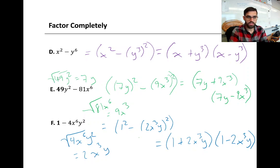For example e, we take the square root of the first term: the square root of 49y squared is 7y, so 7y is our a value. The square root of 81x to the power of 6 is 9x to the power of 3, so 9x cubed is our b value. We write out our difference of squares accordingly: 7y plus 9x cubed times 7y minus 9x cubed.